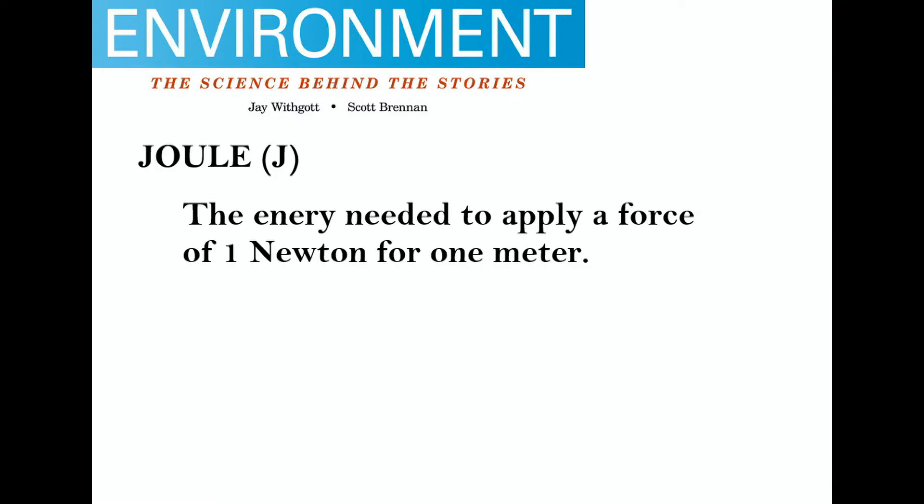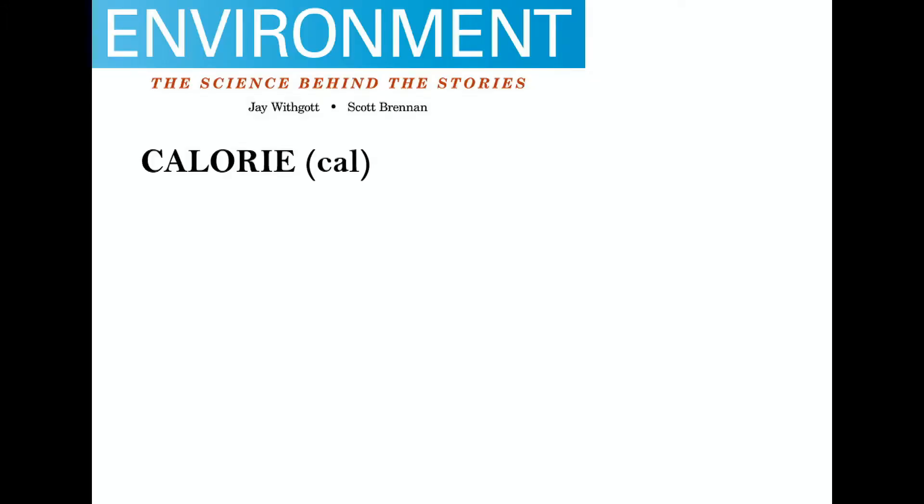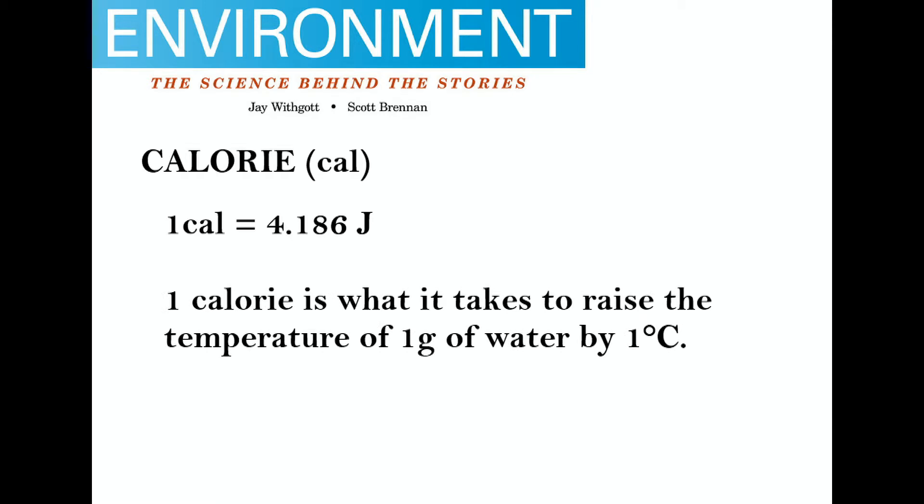The second form of energy is known as the joule. One joule is the amount of work done by the force of one Newton acting through the distance of one meter. The third form of energy is the calorie, a really small amount of energy equal to 4.186 joules. One calorie is the amount of heat required to raise the temperature of one gram of water by one Celsius degree.